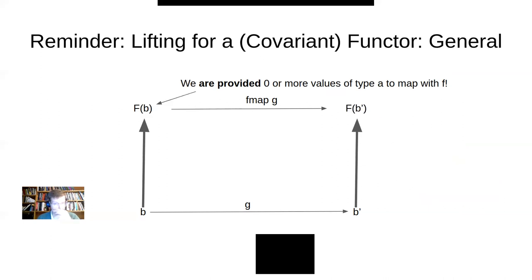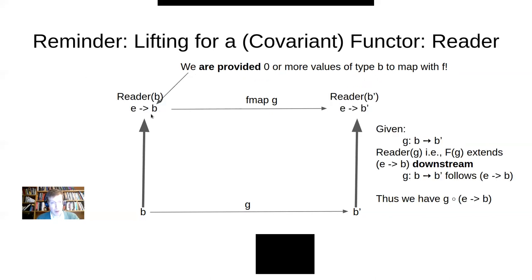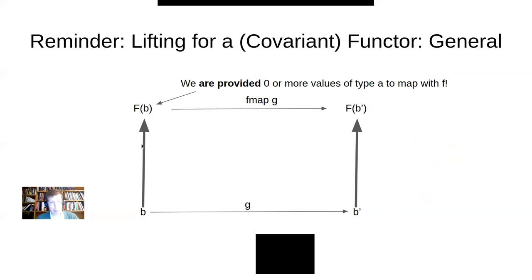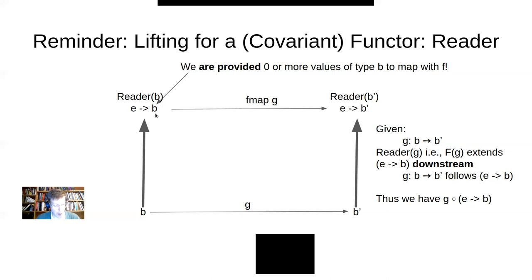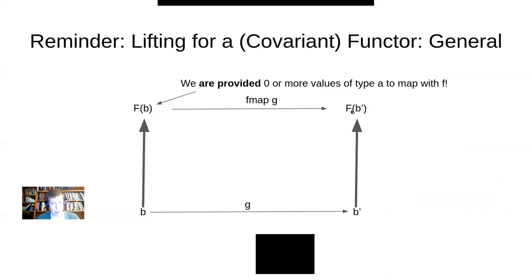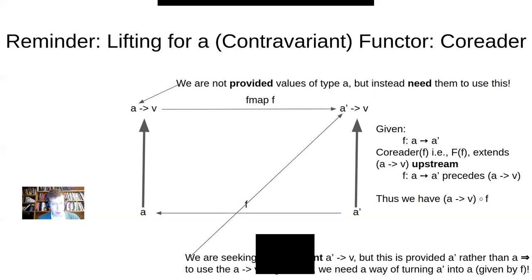To generalize with a covariant functor: we have a B, a function mapping from B to B prime, and something containing B's — a list, a Maybe, or something that produces them. What we want is to produce something that instead produces a B prime. We map it in the same direction. If there's a morphism from B to B prime, we map a functor of B to a functor of B prime. This is covariant — it goes in the same direction.